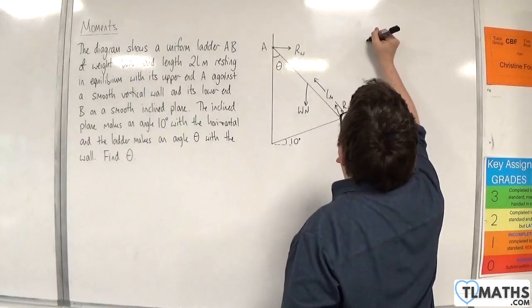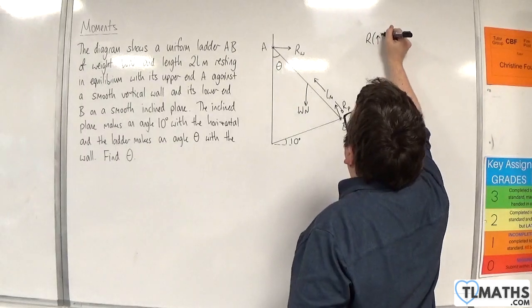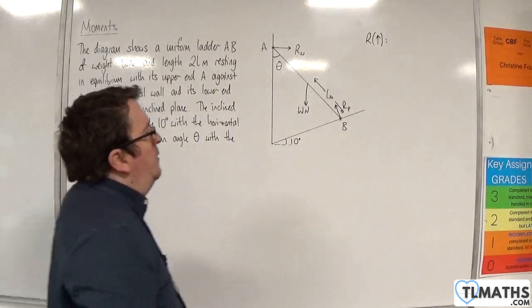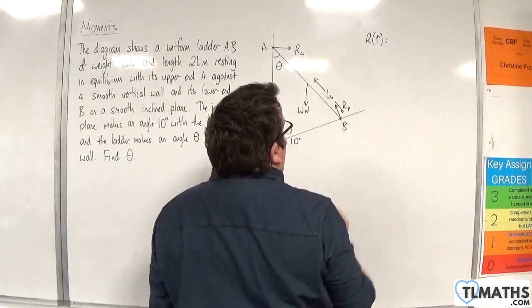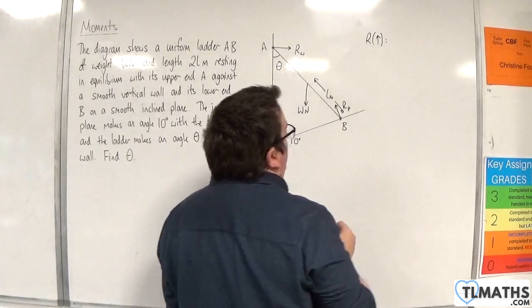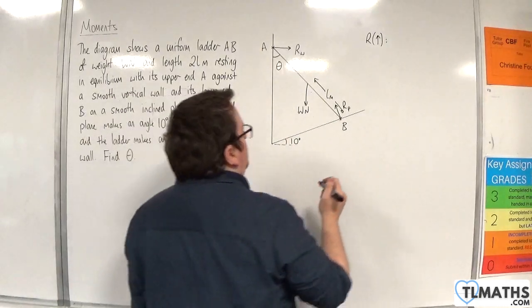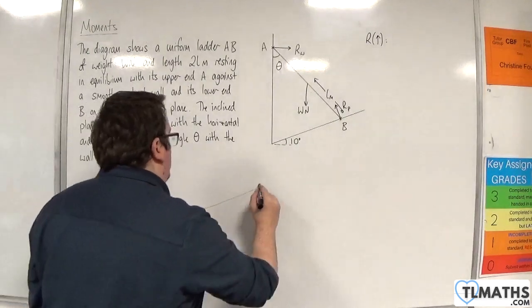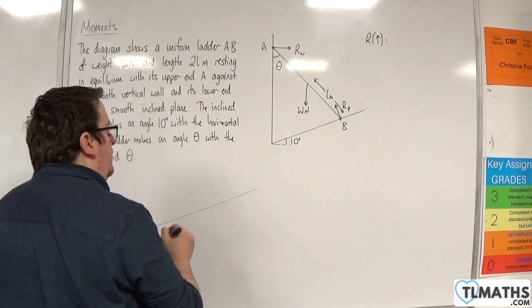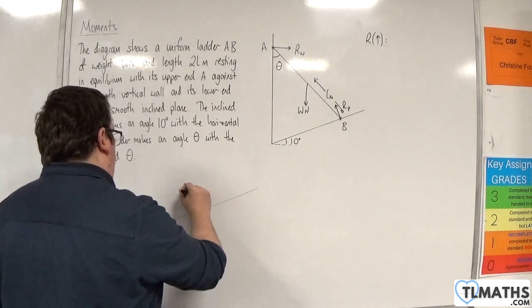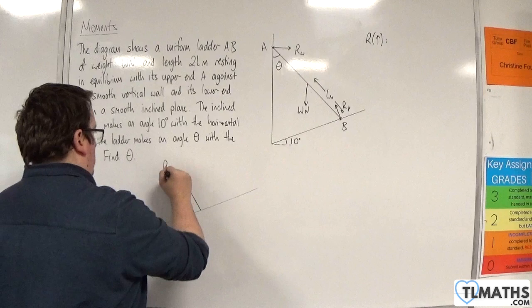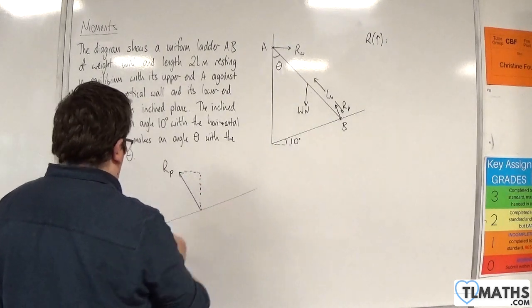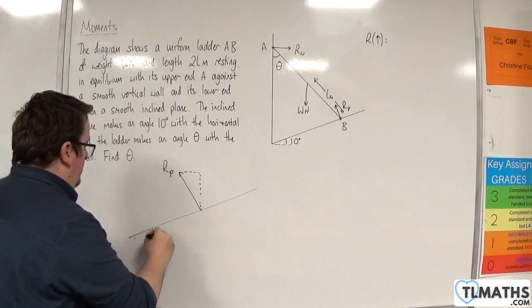We're going to resolve vertically first, taking upwards as positive. Now, in order to do that, I'm going to need the component of RP. So, let's take a look at that in a little bit more detail. Here's my plane, here is my RP, and I need to split that up into its components. Now, that angle there is 10 degrees.